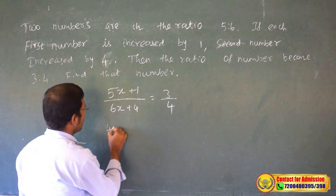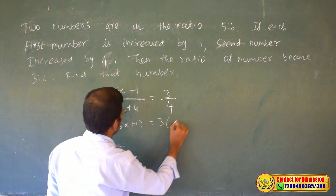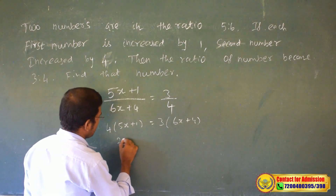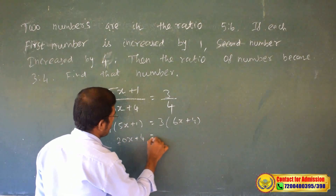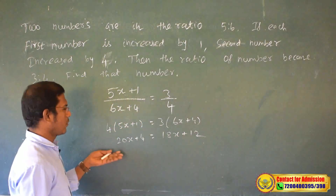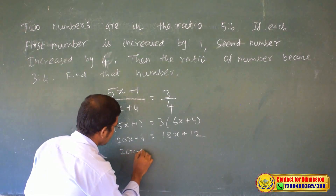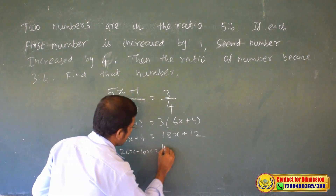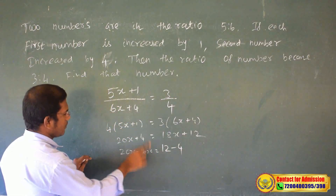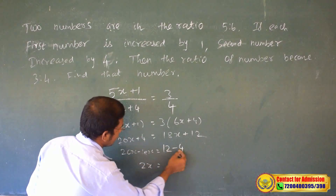So we get: 4 times (5x + 1) equals 3 times (6x + 4). That gives us 20x + 4 = 18x + 12, so 2x = 12 - 4, meaning 2x = 8, therefore x = 4 — wait, 2x = 8.